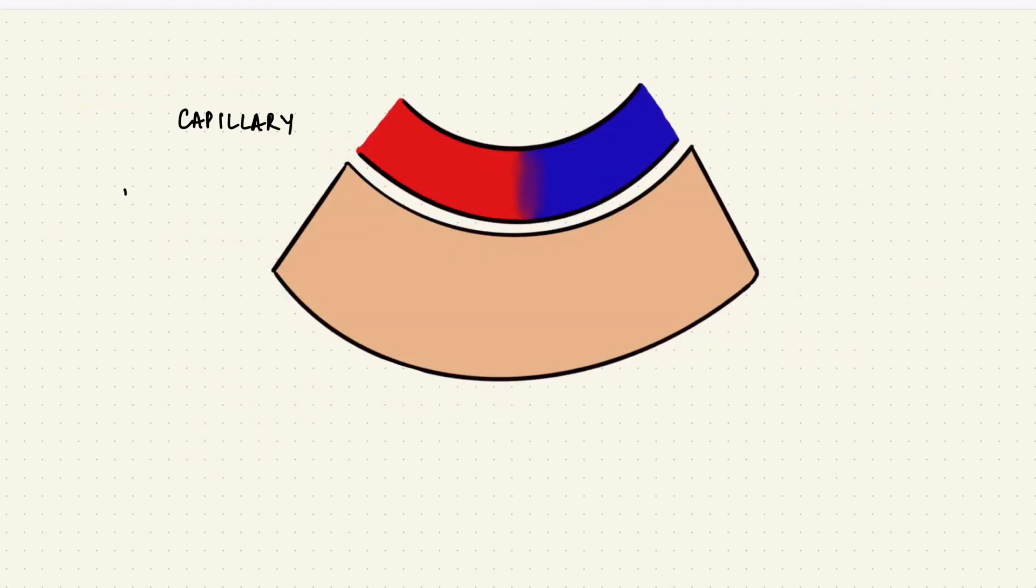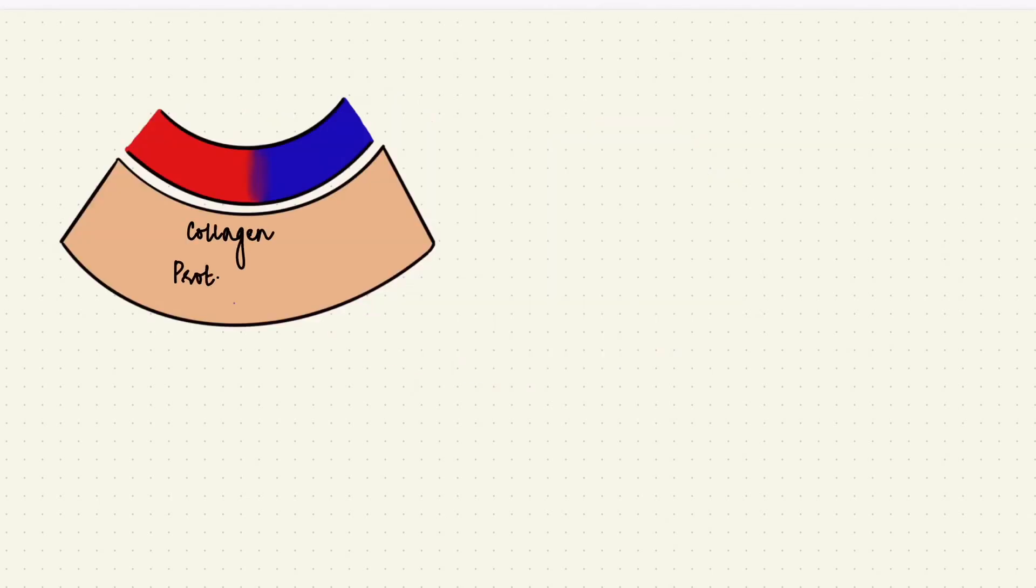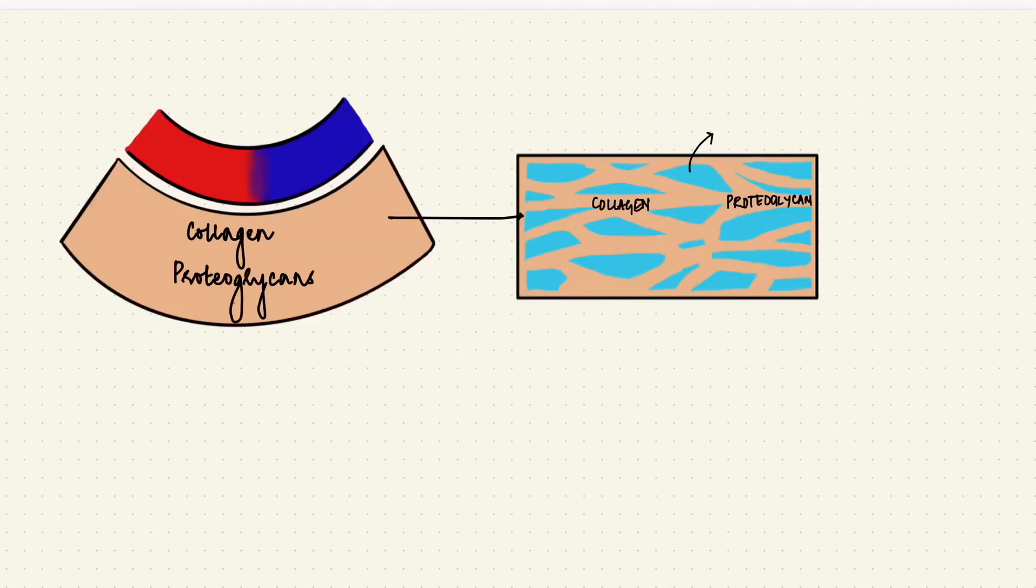The capillary is surrounded by interstitium, so the two are separated by the capillary membrane. The interstitium is like a gel with collagen and proteoglycans. There's fluid trapped in between, and that's the interstitial fluid. Since protein can't fit through the capillary membrane, the interstitium has lesser protein. The only proteins it has comes from leakage from the capillaries.